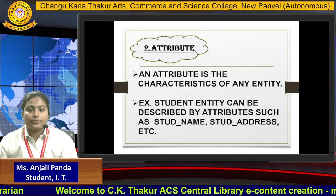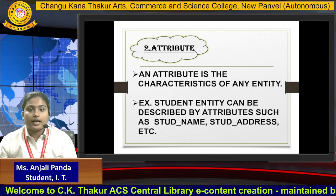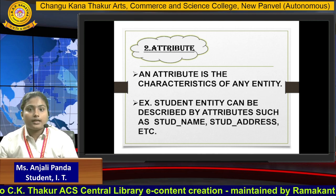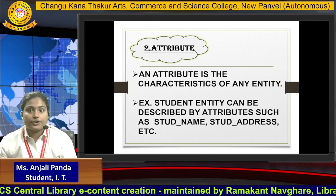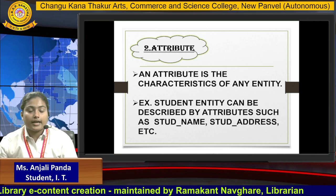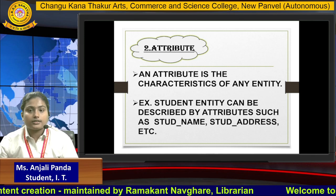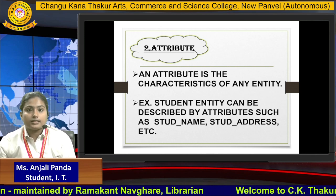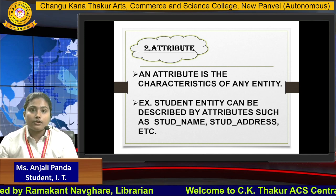Next is attribute. What is attribute? An attribute is a characteristic of an entity. For example, a student entity can be described by attributes such as student name, student address, student class, student division, and student phone number. These are the attribute characteristics of an entity.